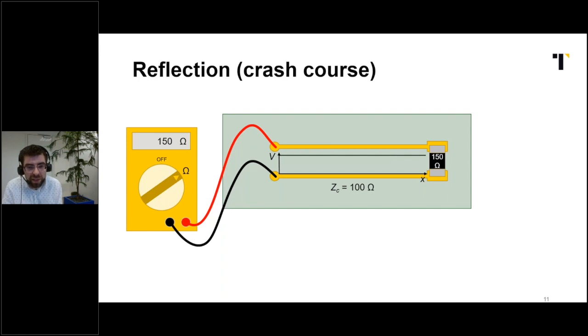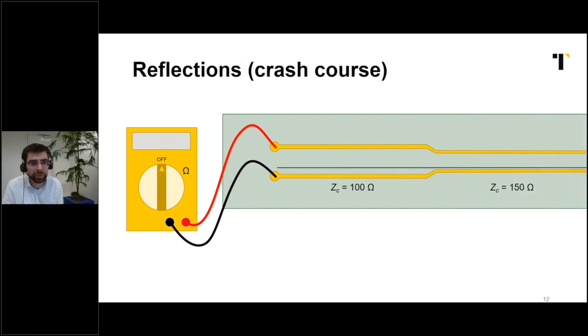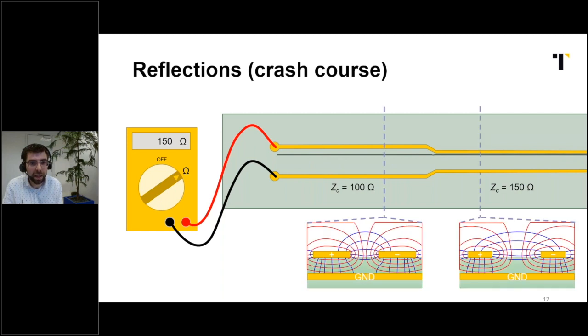You still remember that the resistor can be replaced by an infinite trace with the same characteristic impedance? Let's do that. As you will see from the ohmmeter's point of view, nothing has changed. And this is the major takeaway of this crash course: changes in impedance along a transmission line cause reflections.